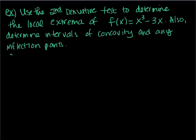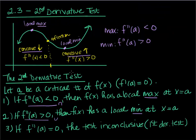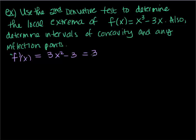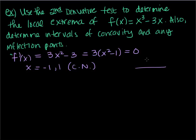So the first thing we need to do is find our critical numbers. Remember, a has to be a critical number. Once I find the critical numbers, I plug them into the second derivative. Even though we're doing the second derivative test, I still have to find where my first derivative is zero — where I have those horizontal tangents. The derivative of this function is 3x squared minus 3, which factors as 3 times x squared minus 1, and we set that equal to 0. So our critical numbers are x equals negative 1 and x equals 1.